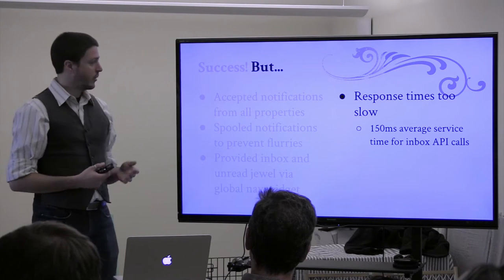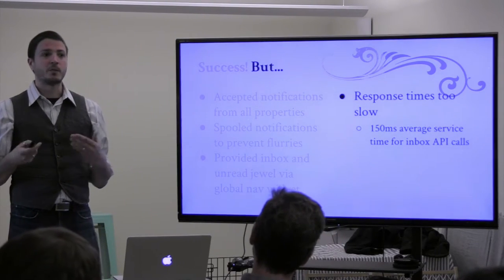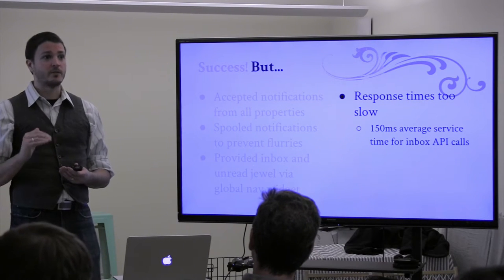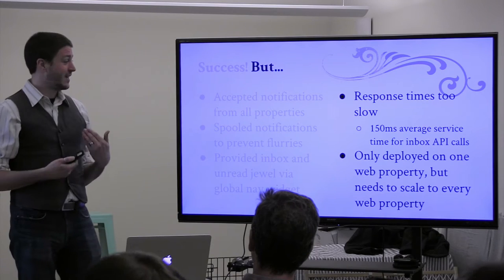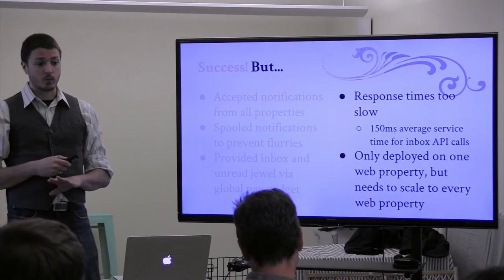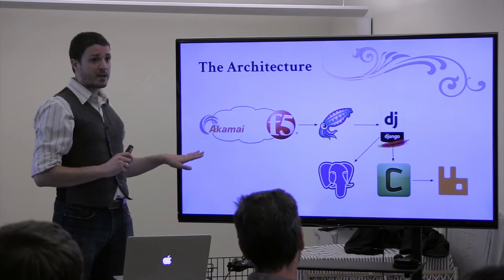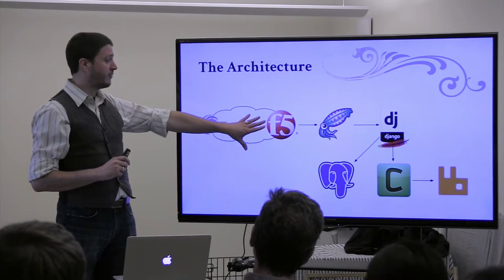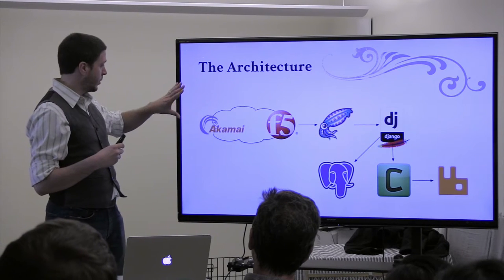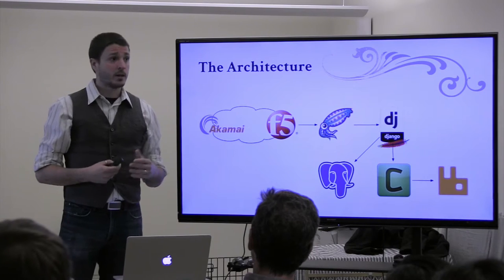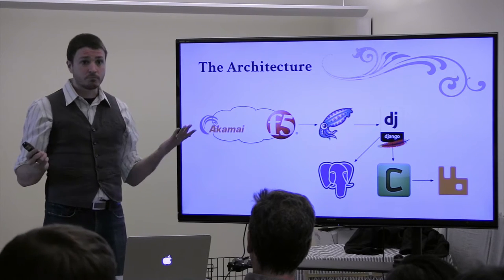Response times were too slow — about 150 millisecond average service time for inbox API calls. For something you're hitting on every single page, it needs to be super responsive. It was only deployed to one web property and needed to scale to every property, so at those performance levels it was not going to work. The architecture wasn't unusual: Akamai as a CDN going to F5 load balancers, an internal Squid proxy, Django running on Apache with mod_wsgi, talking to PostgreSQL, and using Celery with a RabbitMQ broker.